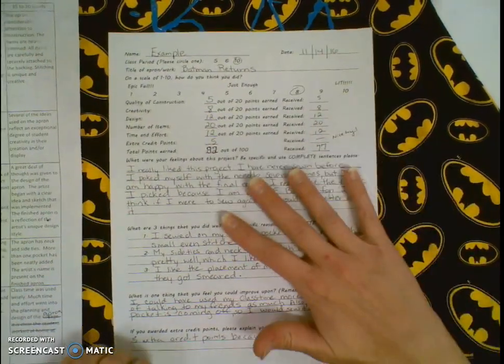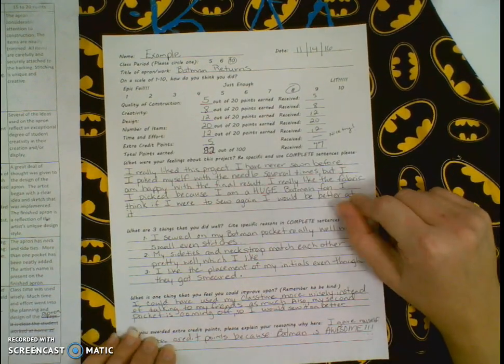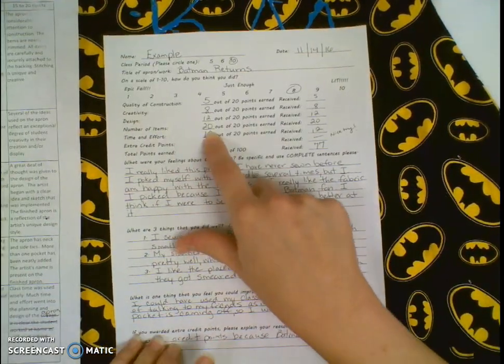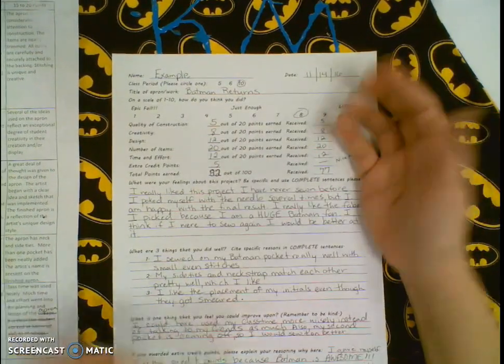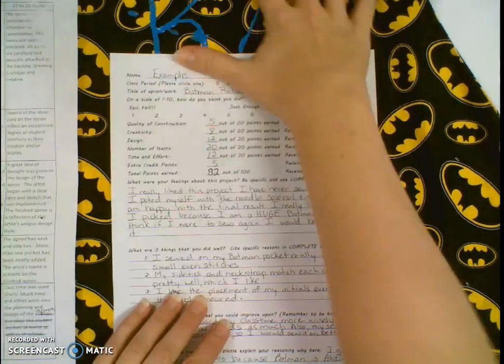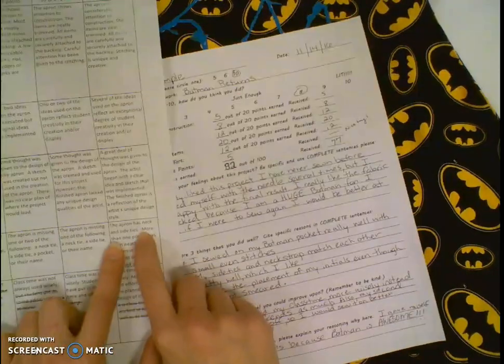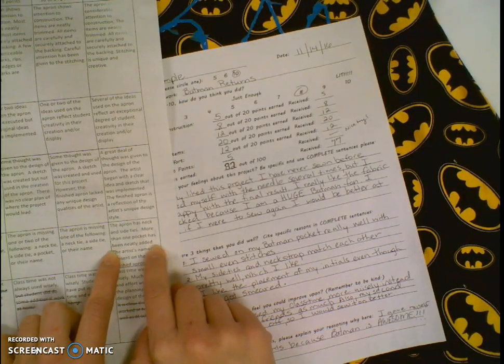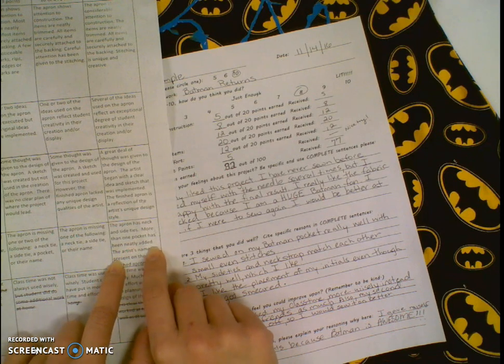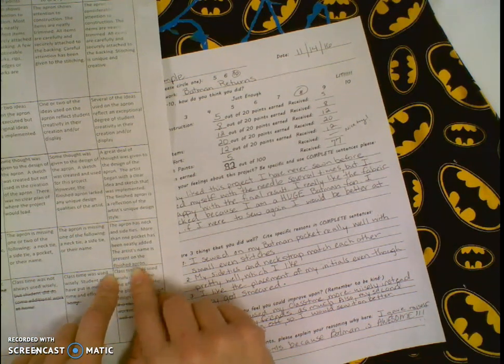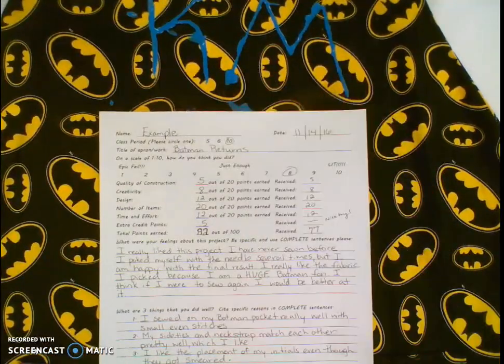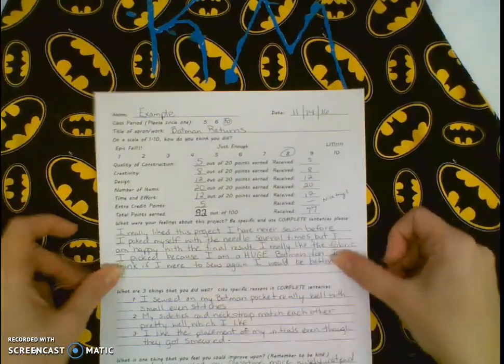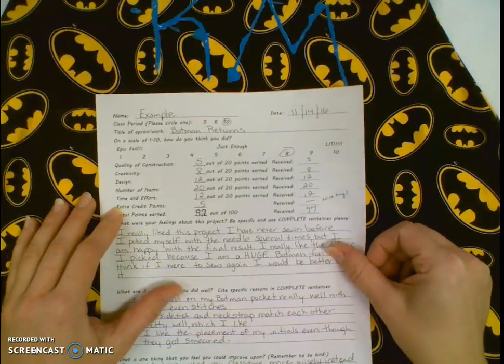The number of items - this one is an easy one to figure out. Either you did it or you didn't. So it's an easy 20 points if you attached everything. It says on here the apron has a neck and side ties, more than one pocket has been neatly added, although you're required two. The artist name is present on the finished apron. Nicknames and monograms count, so be sure to give yourself the full 20 points if you did all those things.